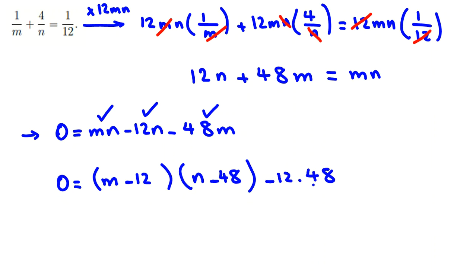Now it is correct. It is exactly this term. We've canceled. Now you take this to left hand side. It will be 12 times 48 equals (m - 12) times (n - 48).